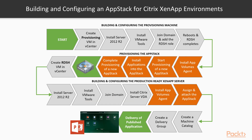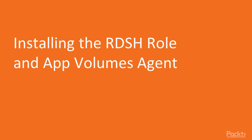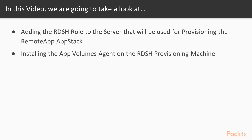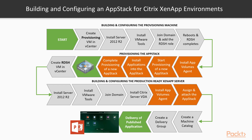Once the App Stack has been created, it is then assigned to the production XenApp server, attached, and then the application is configured for publishing to the end-users. If we look at the process in a little more detail, the diagram on screen shows the complete process from building a provisioning machine, provisioning an App Stack, and then building a production XenApp server with the App Stack attached and ready to deliver applications to the end-users. The App Volumes components are highlighted in orange in the diagram, showing how to add the RDSH role to the provisioning server. The steps outlined in the diagram show the tasks we are going to complete in this section, starting with the build of the RDSH server.